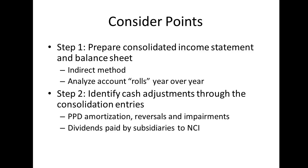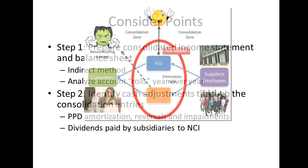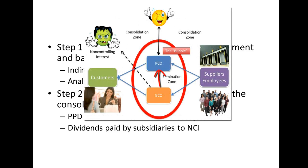Next, we have dividends from the subsidiary to the parent. These always get eliminated because cash does not leave the bubble. Therefore, there should be no mention of those dividends on the cash flow statement. However, if we do have a non-controlling interest, then we will have a separate line reporting the cash outflow of those dividends because the cash does escape the bubble.